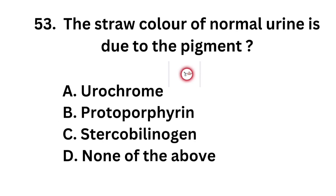Question number 53. The straw color of normal urine is due to the pigment. Option A: Urochrome. Option B: Protoporphyrin. Option C: Stercobilinogen. Option D: None of the above.